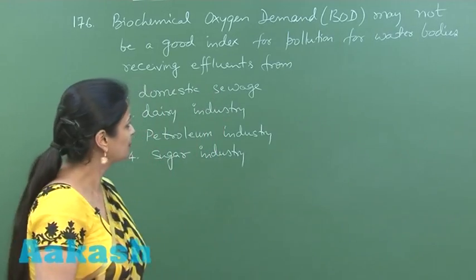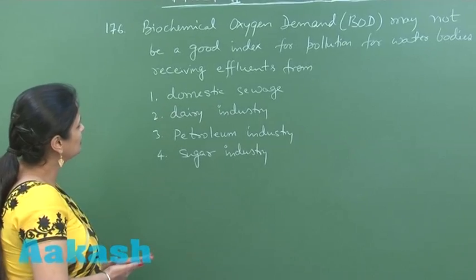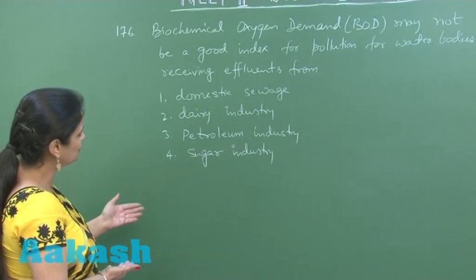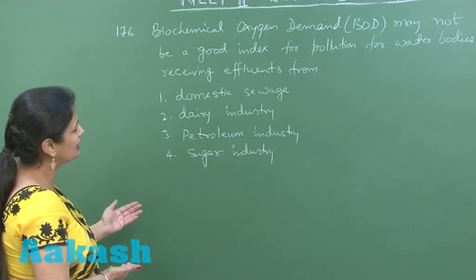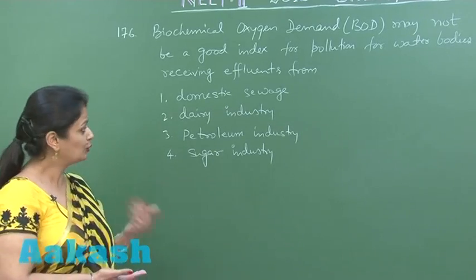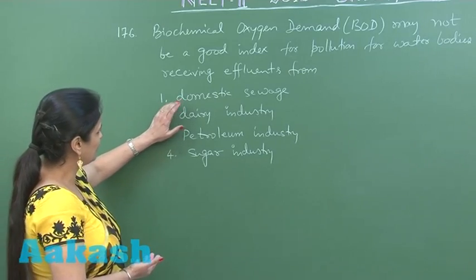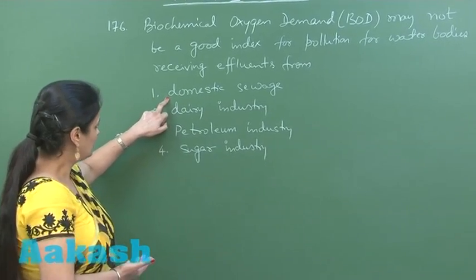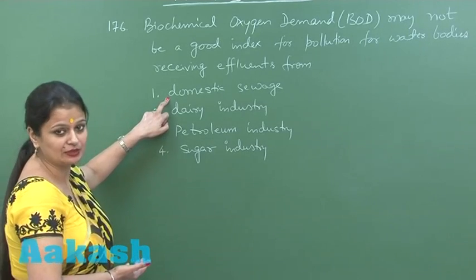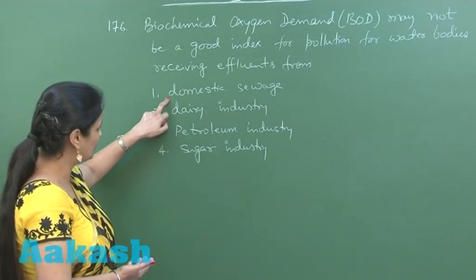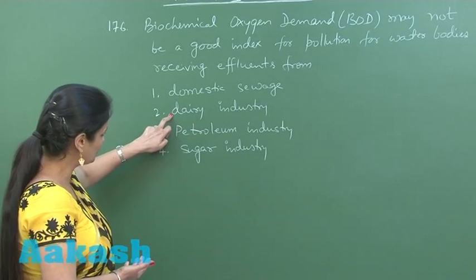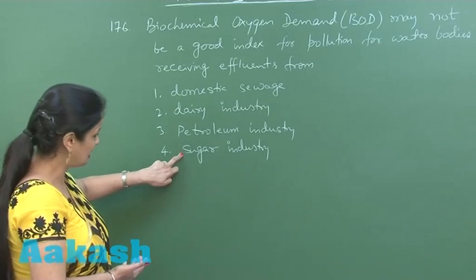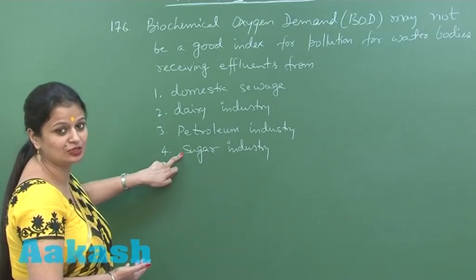In this question, we have to identify in which of the following cases BOD cannot serve as a good parameter. For domestic waste — yes, it has organic matter, so BOD can serve as a good parameter. For dairy industry and sugar industry — yes, their effluents are also rich in organic materials, so BOD works well there too.